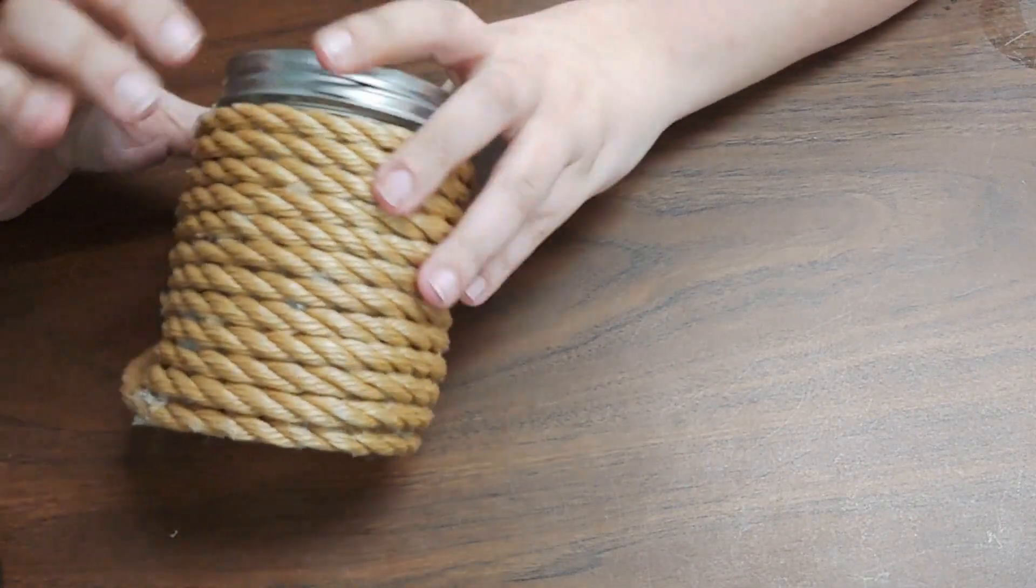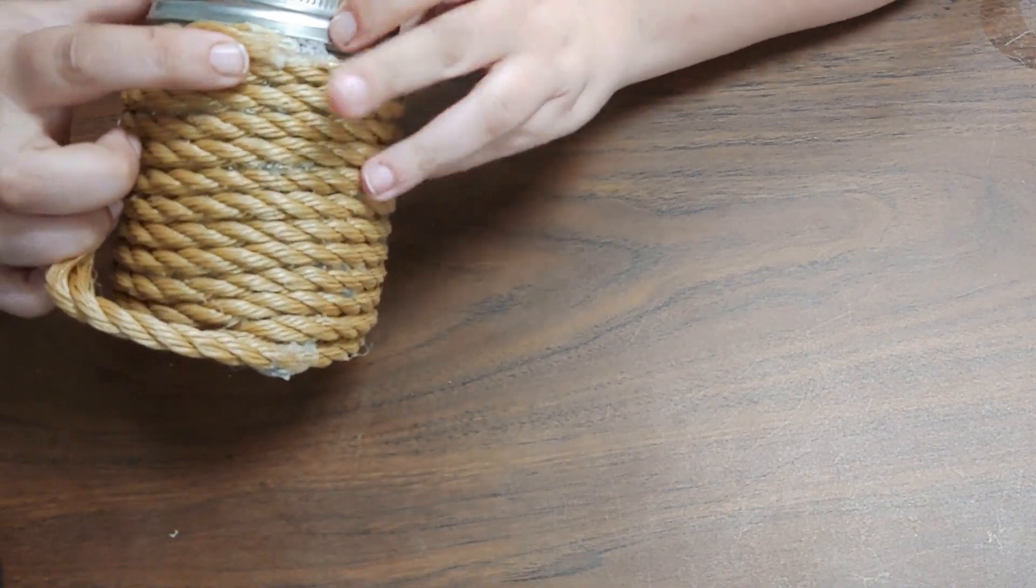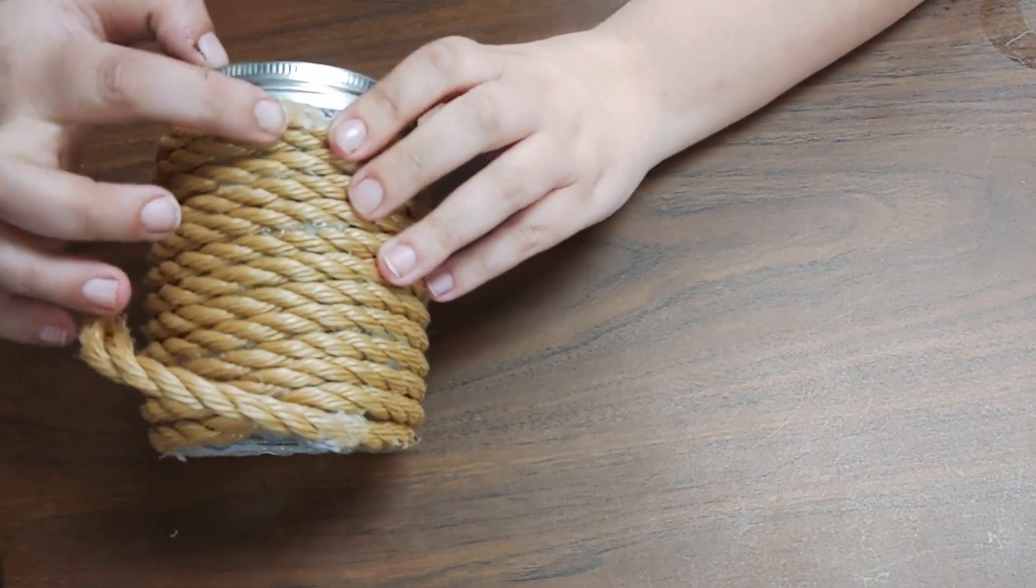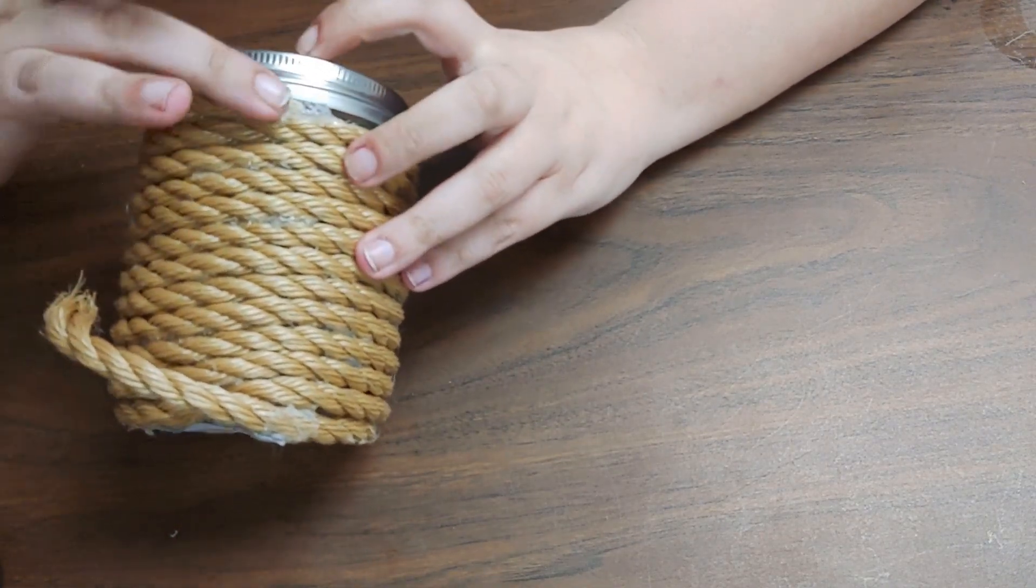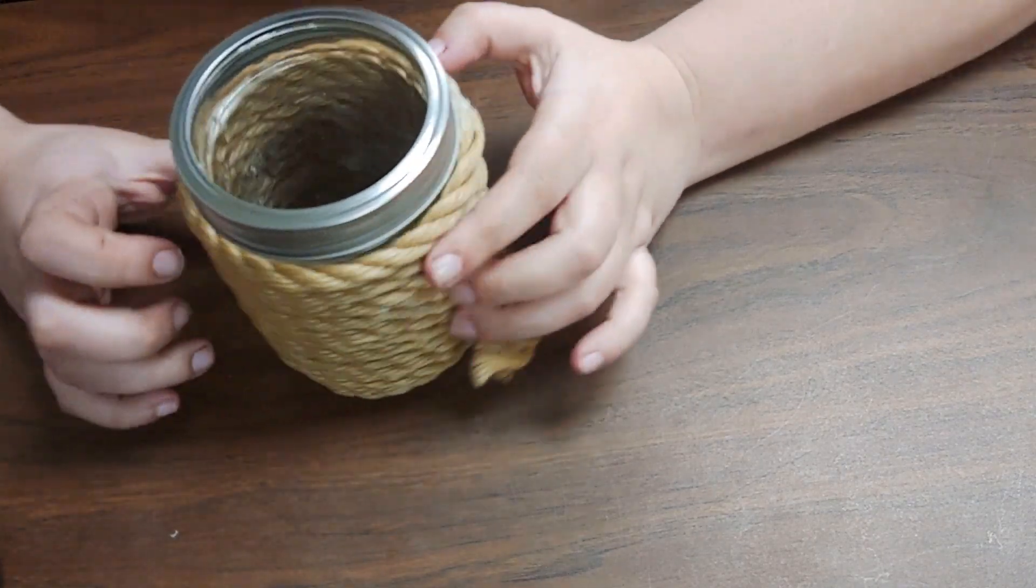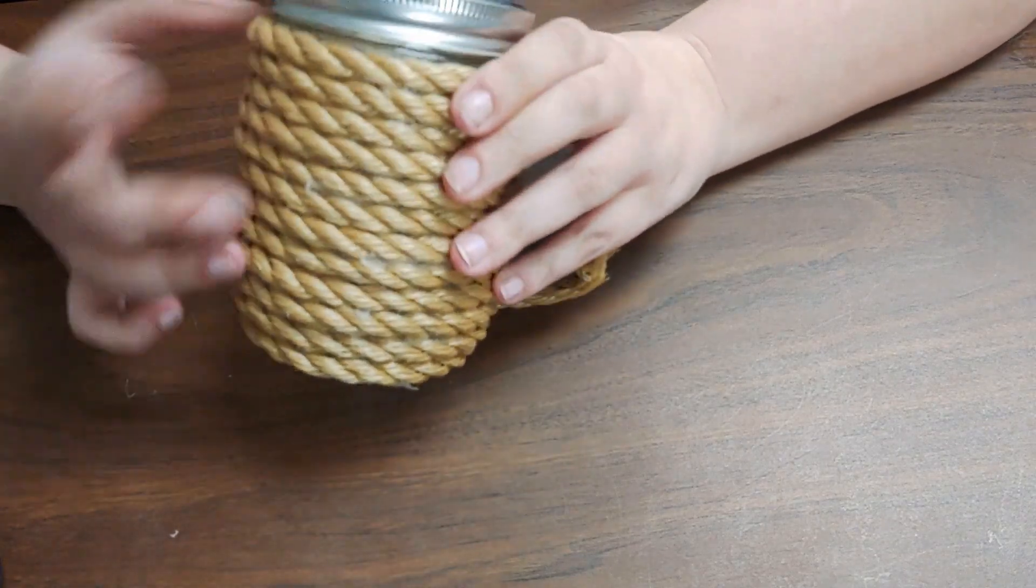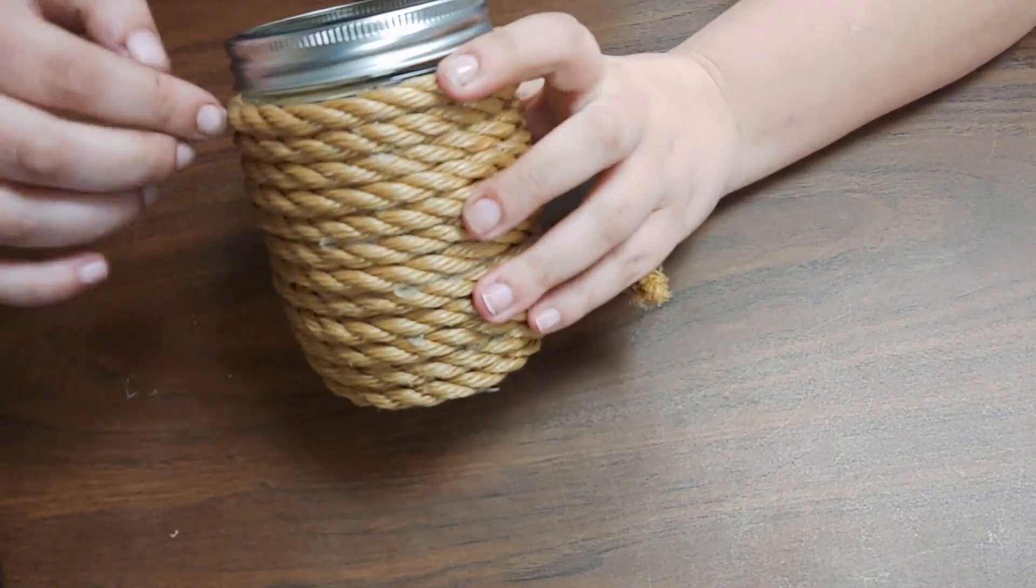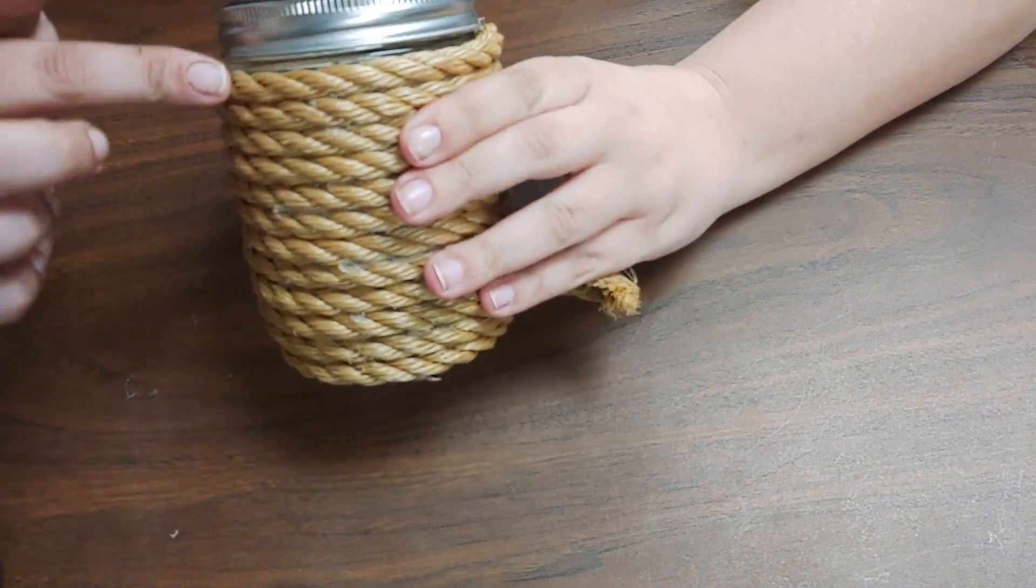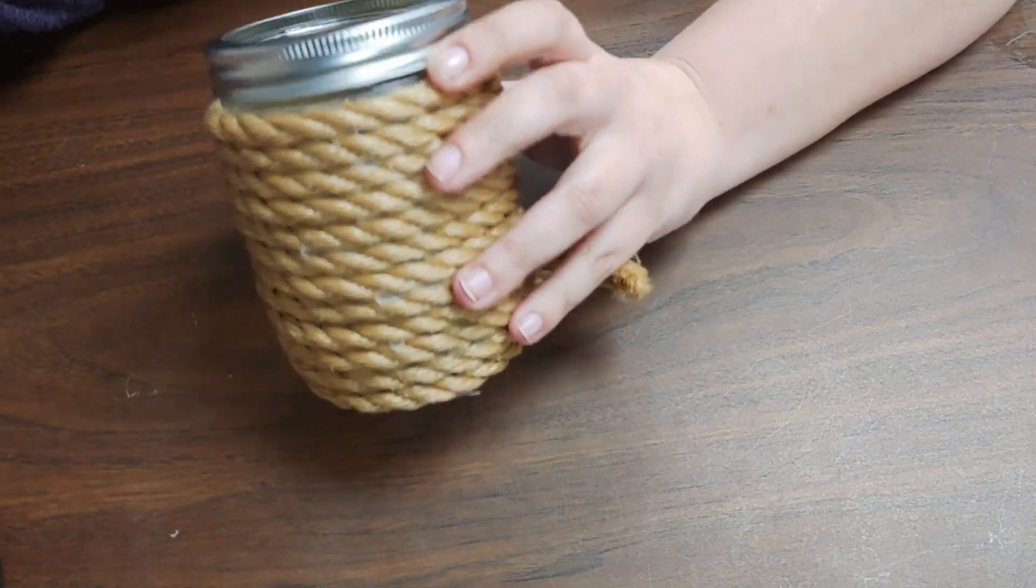Alrighty everyone, as you can see I'm all done wrapping. What I did here is I cut off the end kind of a diagonal and I glued it right into place. One thing that you could do, which I opted out of because of the type of glue I was using, is you could put—instead of wrapping this last layer tight—you can leave two loops to create the ears.